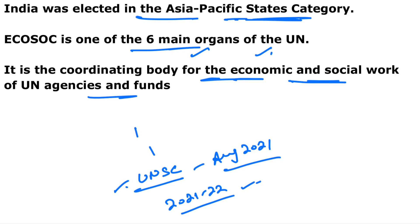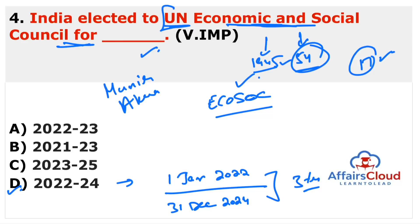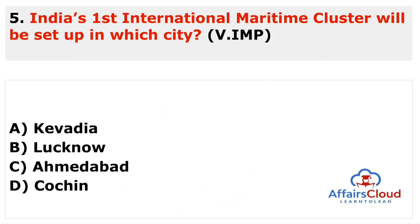The UN Security Council has 10 non-permanent members and 5 permanent members. Non-permanent members serve for two-year terms. ECOSOC was established in 1945 along with the United Nations, headquartered in New York. It has 54 member countries. Its president is Munir Akram.